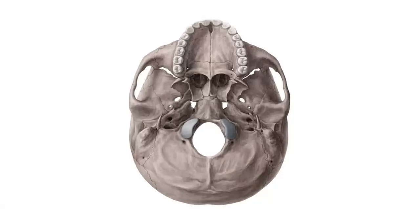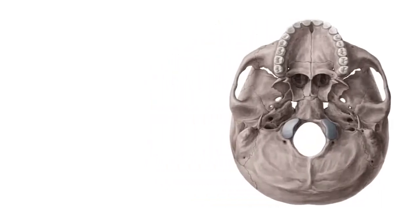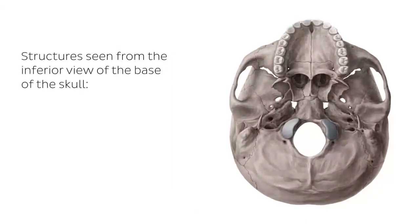And the intention of this tutorial is to clarify all these structures and make it easier for your next exam. So what I'm going to be doing is focusing on different structures that we're going to be seeing on the inferior view of the base of the skull, which is when you just turn the skull and look at the inferior view of the entire cranium — and removing, of course, the mandible.